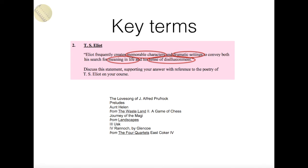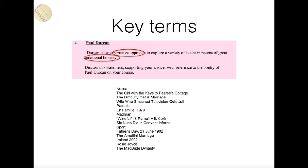I just want to give another, simpler example: 'Paul Durkin takes a narrative approach to explore a variety of issues in poems of great emotional honesty.' The key terms I feel are 'a narrative approach' and 'emotional honesty.' Every poet is going to explore issues in a certain way, and every single poetry question requires you to talk about themes, the subject matter — the 'what' and also the 'how.' The 'how' is imagery, structure, rhyme, whatever poetic techniques they use. Most of all, how does it all come back to the themes? What is it about the way they write that emphasises what they are writing about? That's the key to any poetry question.